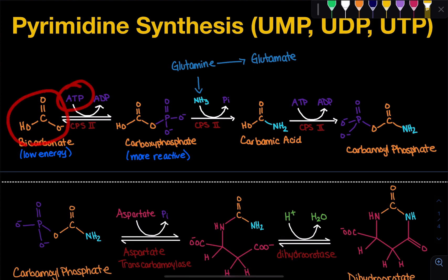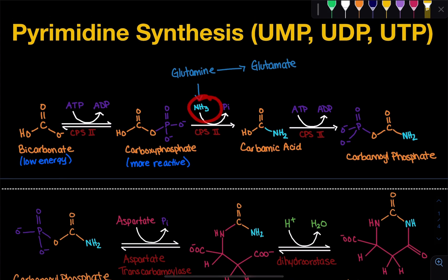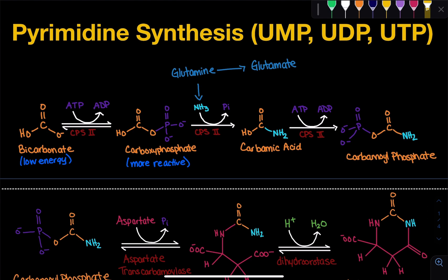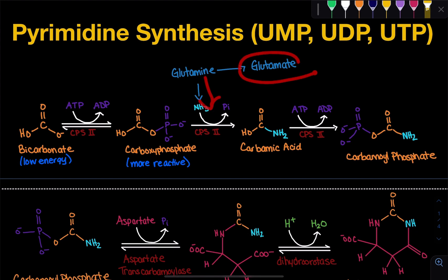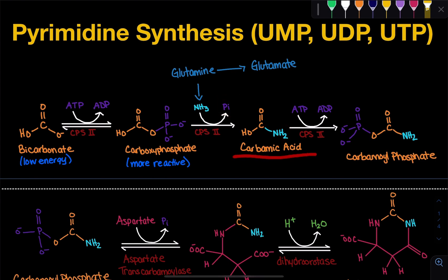Once we've added that terminal phosphate onto the bicarbonate, we get this more reactive carboxyphosphate. In this carboxyphosphate, the phosphate group can act as a good leaving group — it's going to leave and allow for the binding of ammonia. The ammonia binds and we get carbamic acid. This ammonia is coming from glutamine, because glutamine is a molecule that acts as a temporary storage unit for excess ammonia. When glutamine donates that amino group, it gets converted into glutamate, since the only difference between glutamine and glutamate is that extra nitrogen.